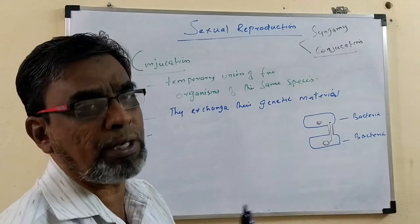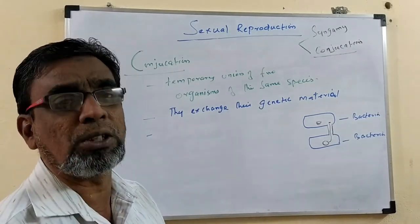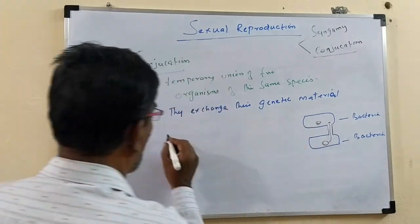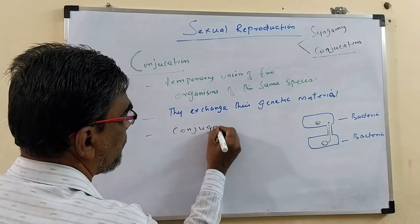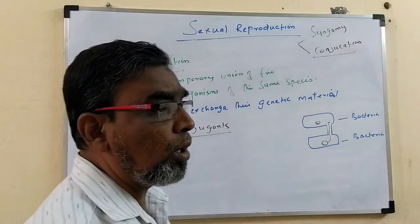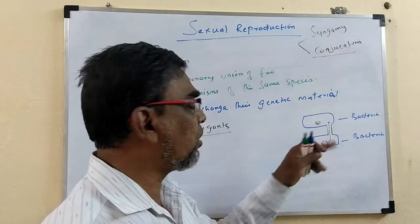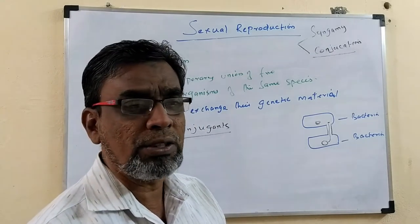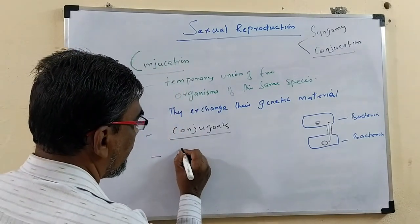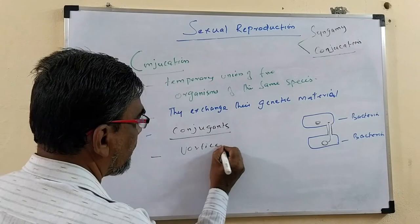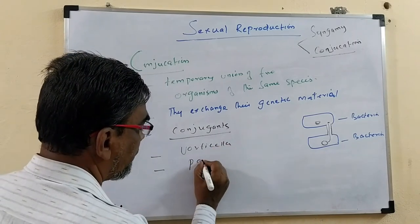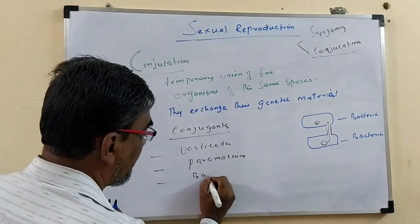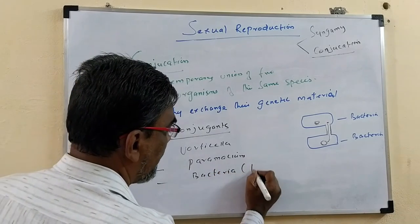The exchange of genetic material through a conjugation method happens in bacteria. Both the bacteria involved are called conjugates — organisms which are involved in the conjugation process. This type of reproduction takes place in Vorticella, Paramecium, and also in bacteria, especially prokaryotes.